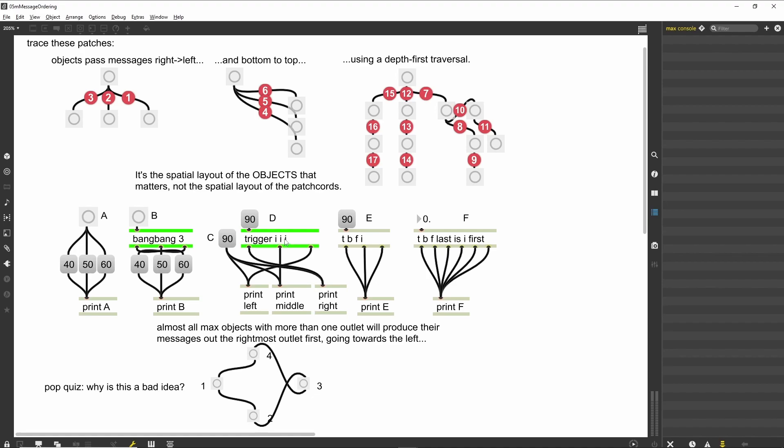The next patch contains two message boxes with the integer 90. If we click on the one labeled C, which is connected directly to the print objects, the max console displays the typical right-to-left ordering of messages. However, if we click on the message box connected to the trigger object, we see that we can route the patch cords to print in left-to-right order. The send messages are all printed as the integer 90, since our arguments for trigger were of type I.